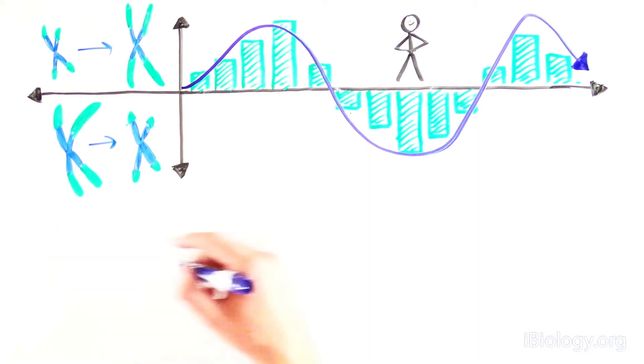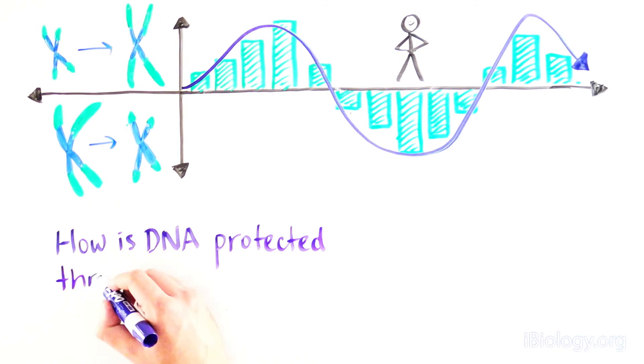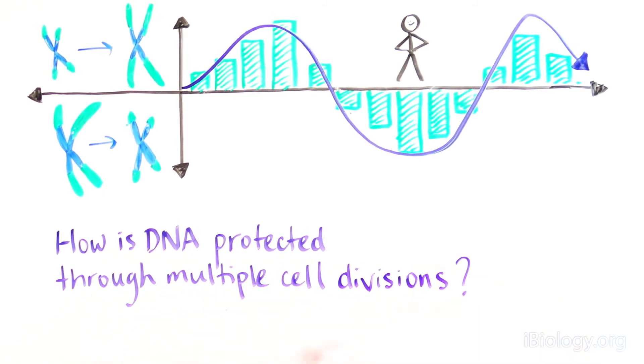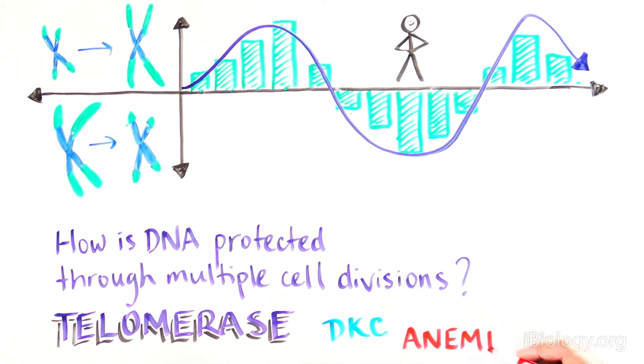It's fascinating to see the basic science question of how DNA is protected through multiple cell divisions lead to the discovery of an enzyme that is now implicated in a growing number of diseases, and whose extremely complex biology we're still trying to unravel 30 years later.